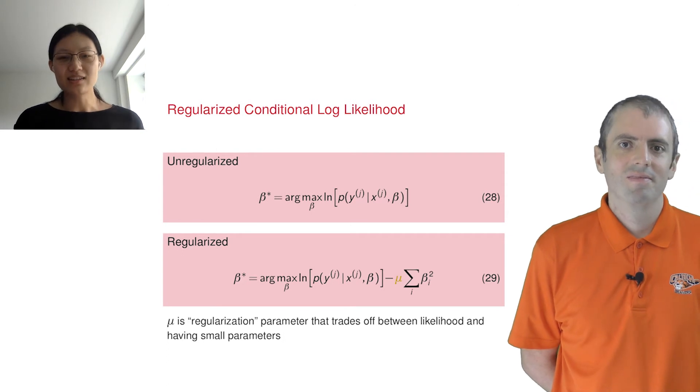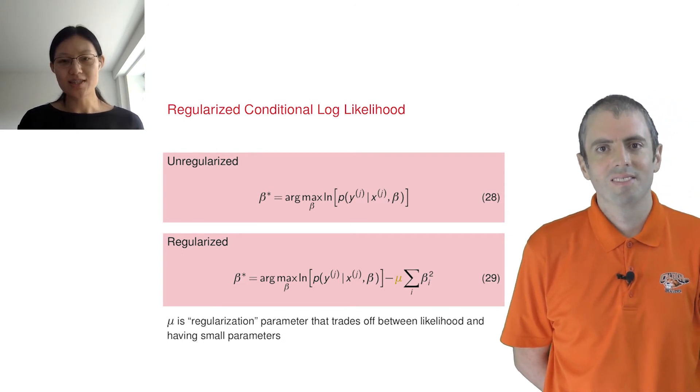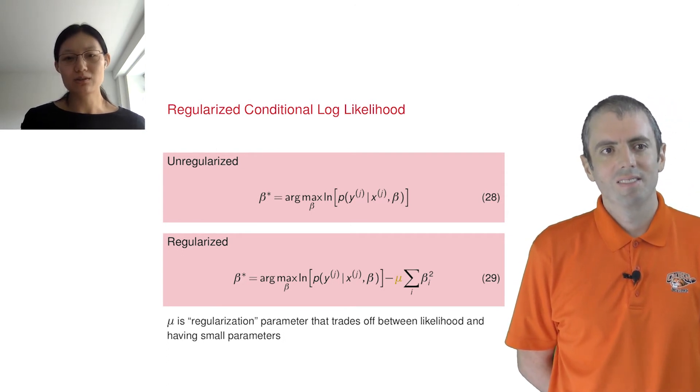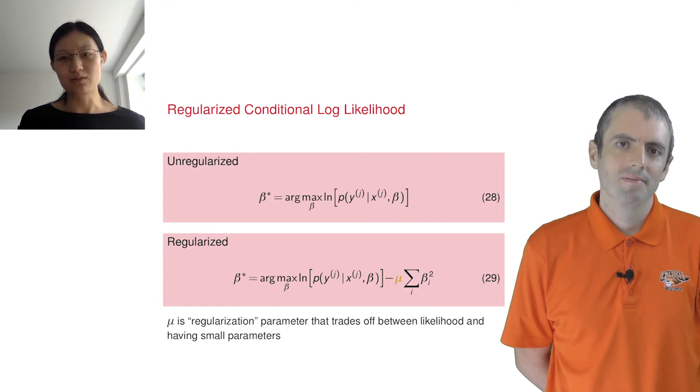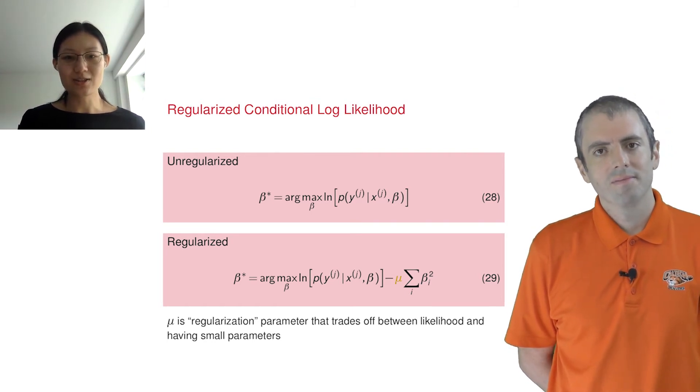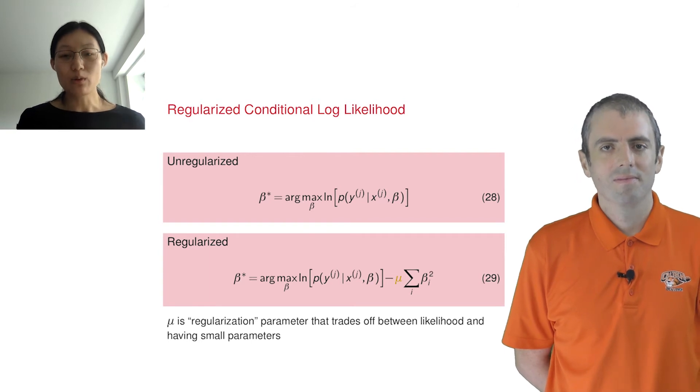Yes, exactly. The other thing to watch for is that sometimes the regularizer could make the objective function non-convex. In this case, luckily it's still convex. But it's important to know there's other possibilities.